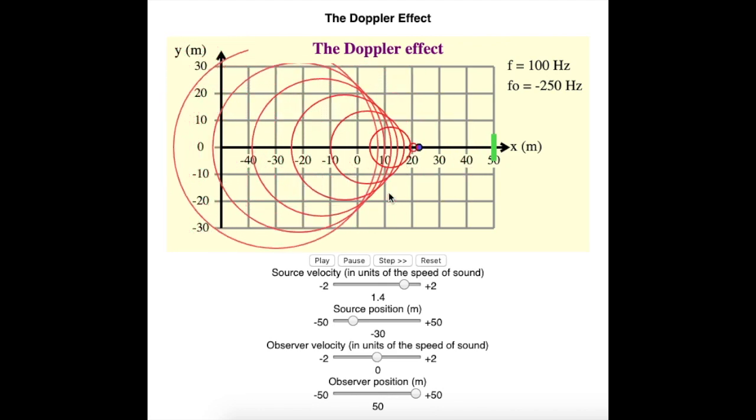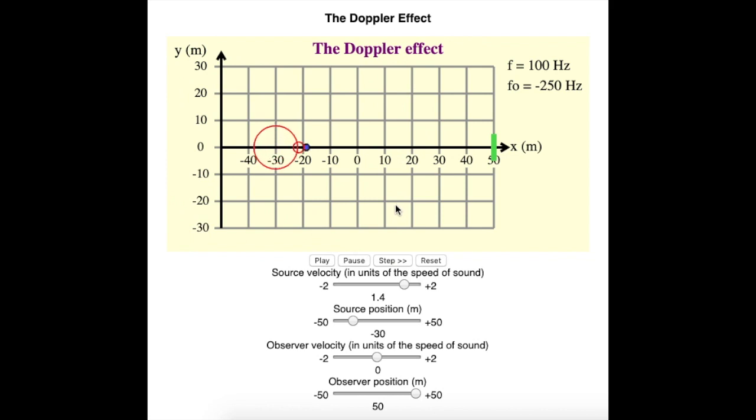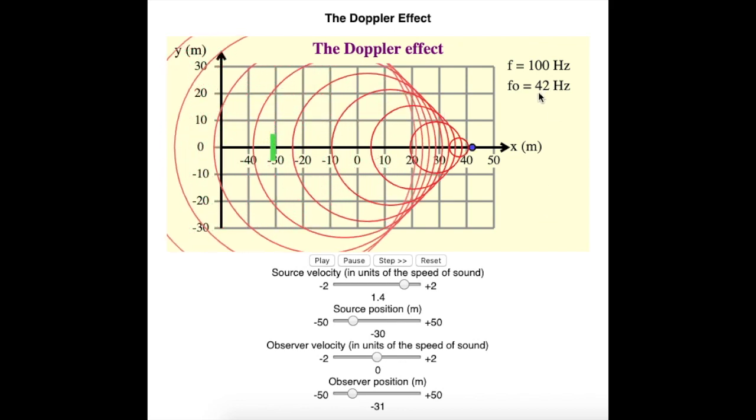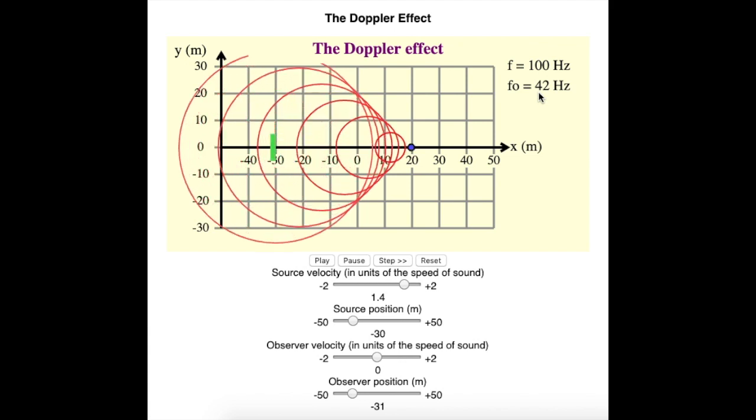Notice that ahead of this fast object, there's no detected frequency. You're not getting anything. But behind, it's just a regular old stretched out Doppler effect. So if we were to put the observer way back here, notice that the Doppler shifted frequency is just lower, but it's not ridiculous.